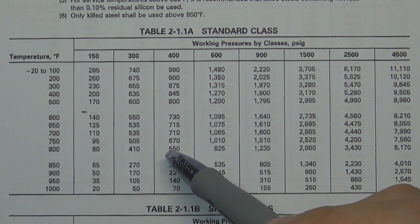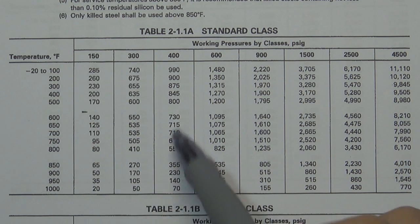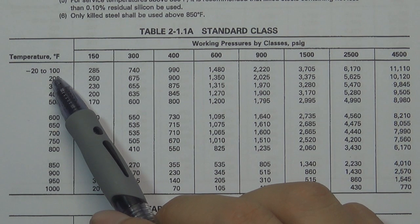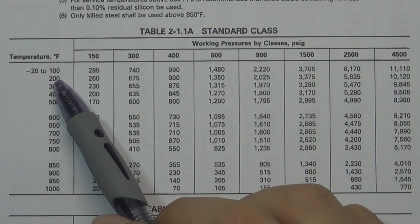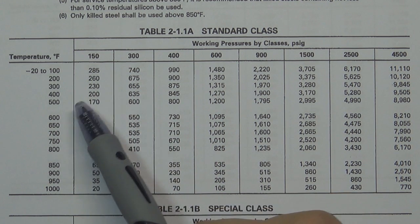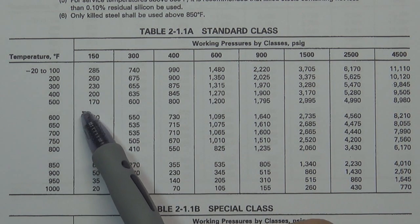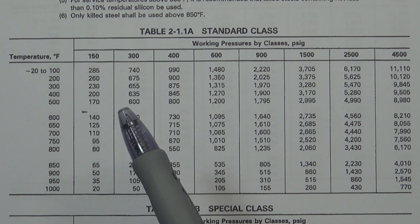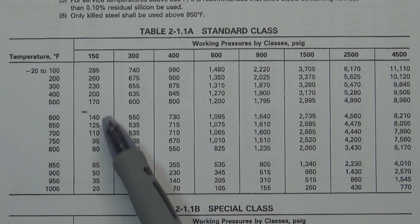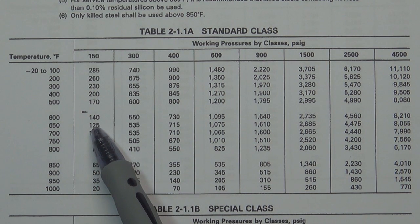For example, if you have a valve made of WCB with class 150, you can use this table to check how much pressure it can hold. At 100°F working temperature, this valve can hold 285 PSI. When the temperature rises to 500°F, the valve can only hold 170 PSI. And at 600°F, it can only hold 140 PSI.